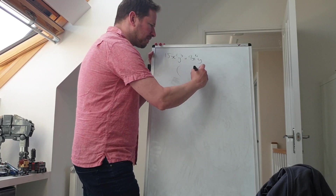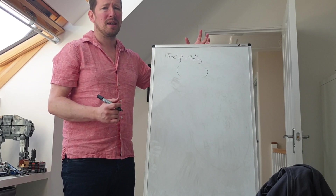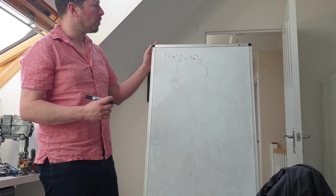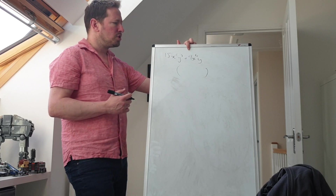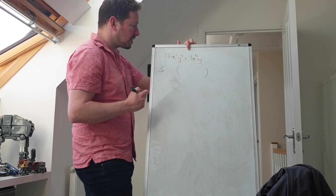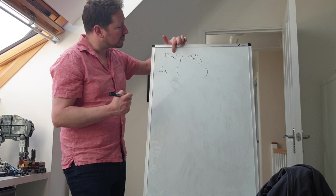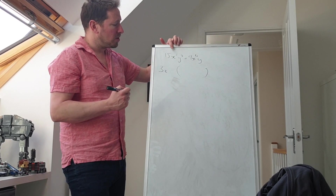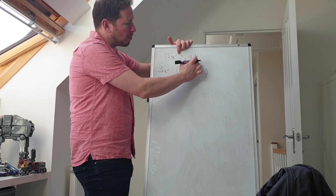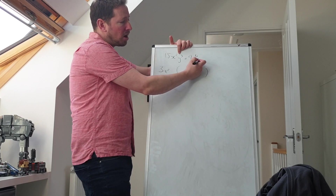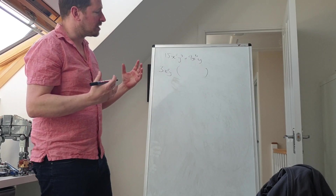This first example uses just one bracket — we use two brackets when we've got an x squared, a number of x's, and a number on the end. For this one, we start by finding what number goes into both 15 and 9: the biggest is 3. Then we look at the letters. There's an x squared and an x to the power of 4, so the biggest power we can take out is x squared. There's a y cubed and a y, so we can only take out a y.